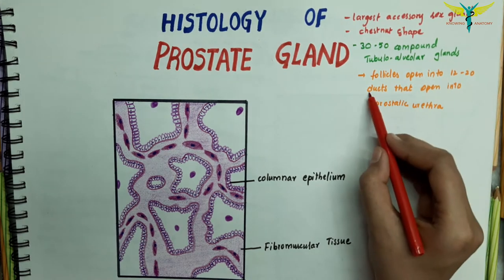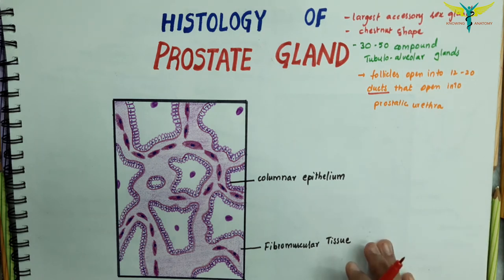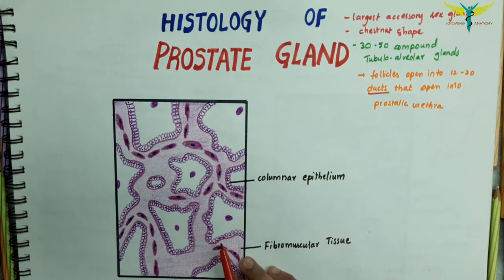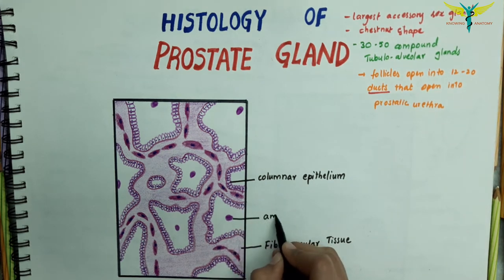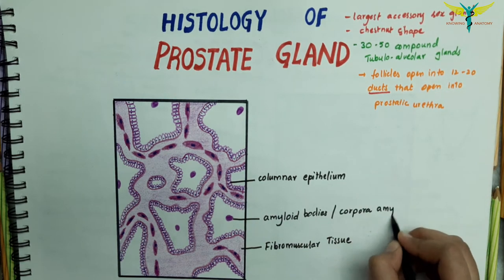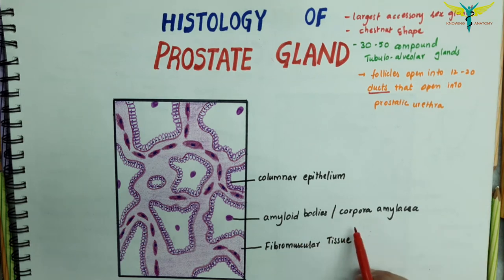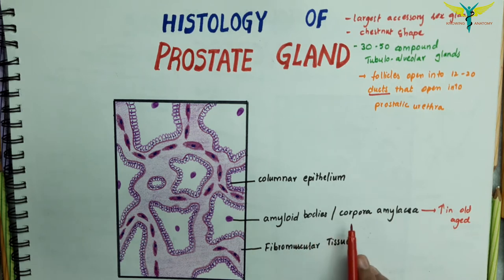These ducts are lined by double-layered epithelium. Small rounded masses of uniform or lamellated structures are found within the lumen of the follicles. They are called amyloid bodies or corpora amylacea. These are more abundant in older individuals and consist of condensed glycoprotein; they are often calcified.